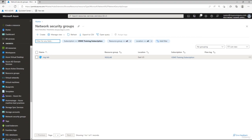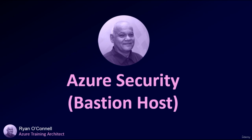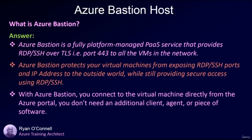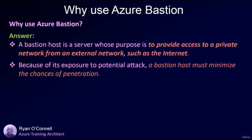Welcome to Azure security Bastion Host in a nutshell. Azure Bastion is a fully managed platform PaaS service that provides RDP and SSH over TLS port 443 to all VMs in the network. Azure Bastion protects your virtual machines from exposing RDP and SSH ports to the outside world while still providing secure access. You connect to Azure Bastion using a web browser directly from the Azure portal — no additional client, agent, or software is required.